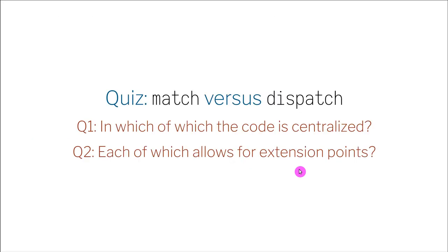In the next slide, these are two key questions for you to think about. First one is in which of the code, in which of the two solutions match versus dispatch, is the code centralized? This is something I just said, try to answer that. And which of these two solutions allows for extension points? That's something for you to try to answer by yourself.